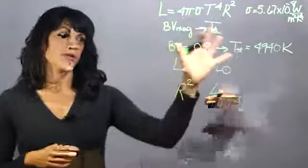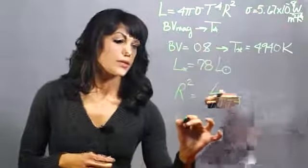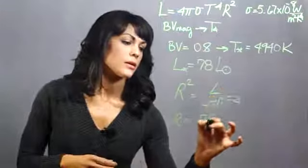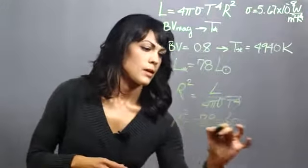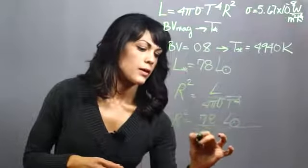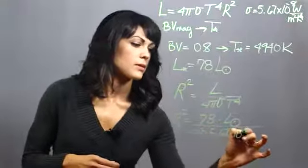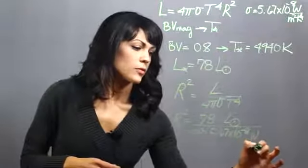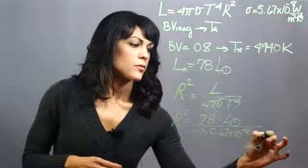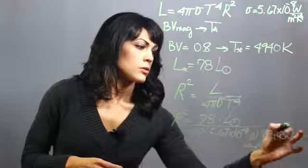Now if we plug in all the values that we have into the equation, we get that the radius squared equals 78 times the luminosity of the Sun divided by 4π times 5.67 times 10 to the minus 8 watts per meter squared kelvin to the fourth times 4940 kelvin to the fourth.